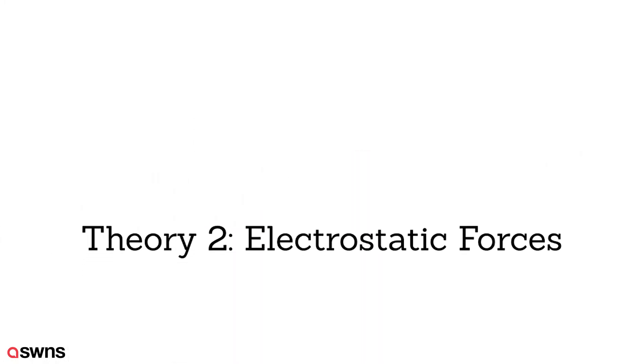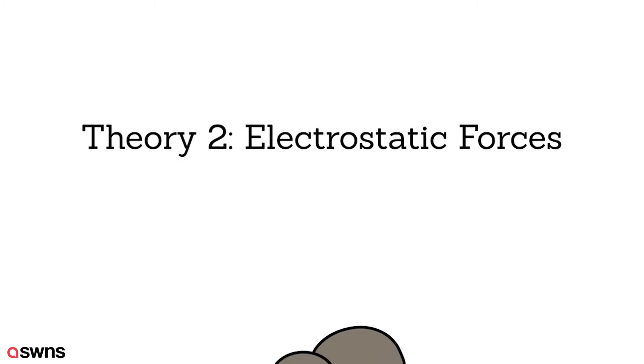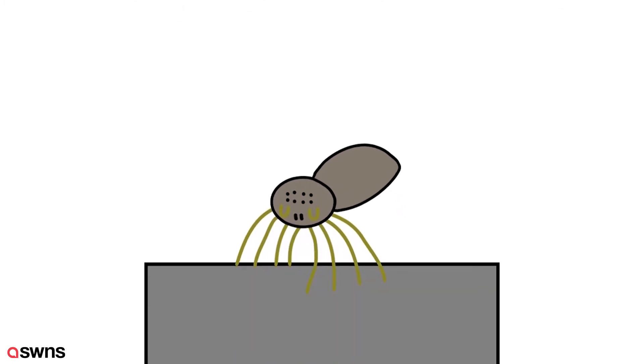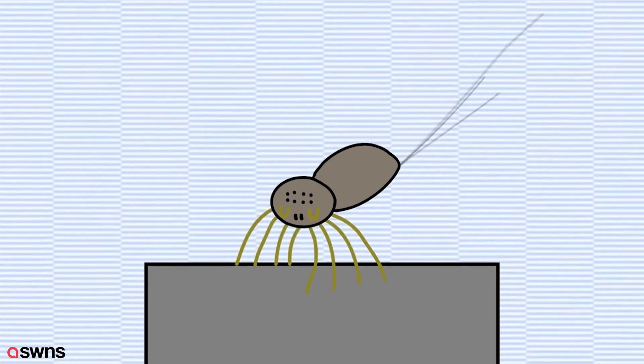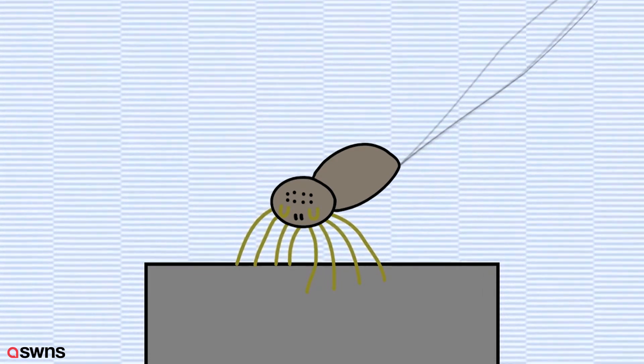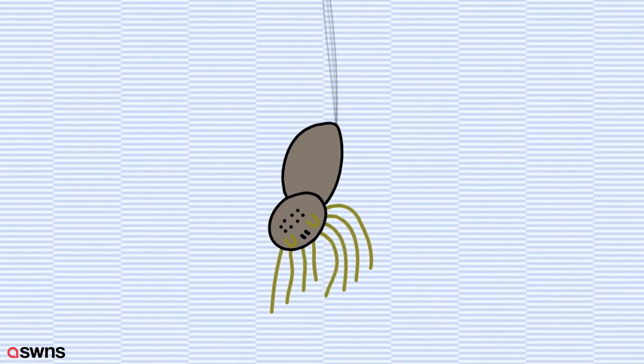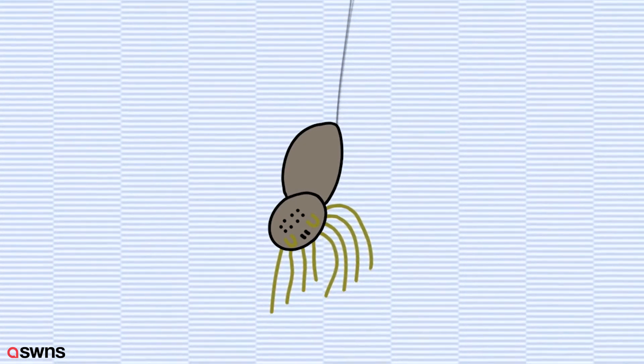The second theory was that atmospheric electricity could also provide the force needed to get the spider aloft. Similar to how your hair lifts to stand on end when you rub a balloon on your jumper, spider silk could be lifted into the air by natural electrostatic forces in the atmosphere.